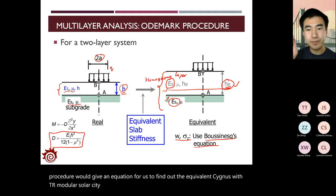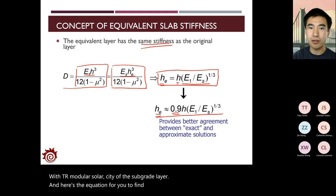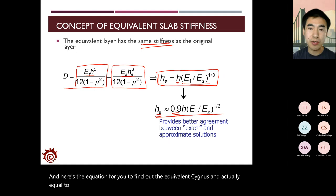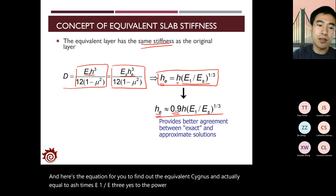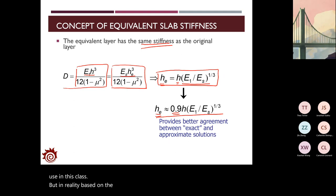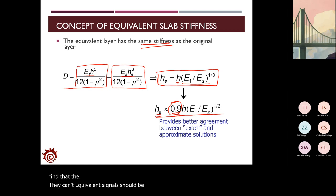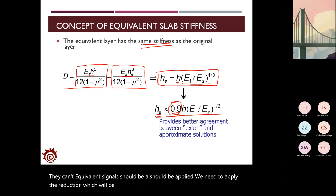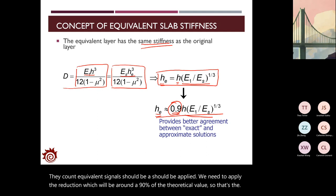Here is the equation for the equivalent thickness: H_E equals H times (E1 divided by E_S) to the power of one-third. This is the theoretical formula to find the thickness we use in this class. But in reality, based on field experiment data, we find that the equivalent thickness should be reduced—around 90% of the theoretical value. That's how we find the equivalent thickness for the Odemark procedure.